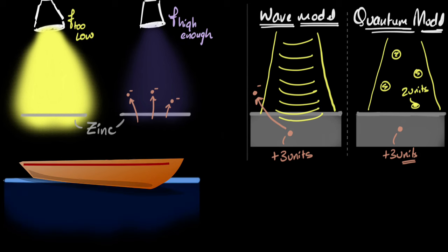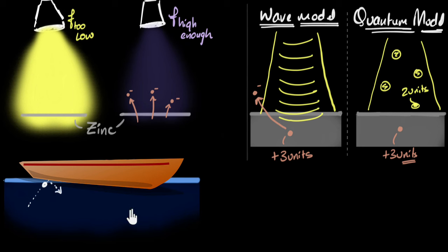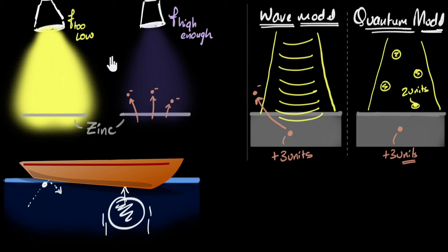It's like trying to knock a boat out of the ocean using ping pong balls. One ping pong ball does nothing, and even millions of ping pong balls one after another won't move the boat. What matters is that a single large cannonball can do it in one shot. Similarly, the number of photons doesn't matter — a single photon must have enough energy on its own to knock the electron off. Only then will photoelectric effect happen.